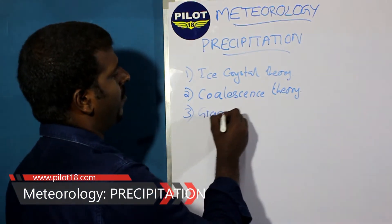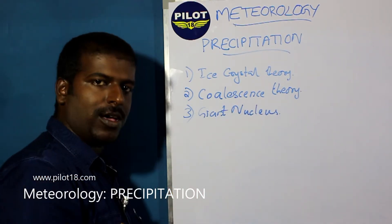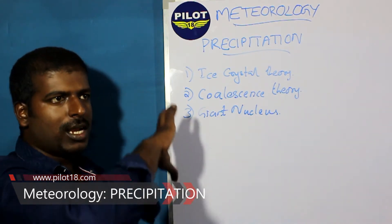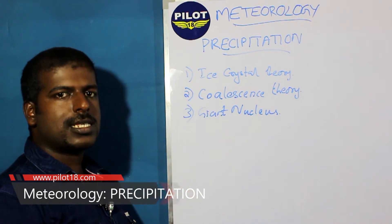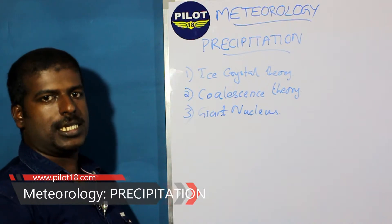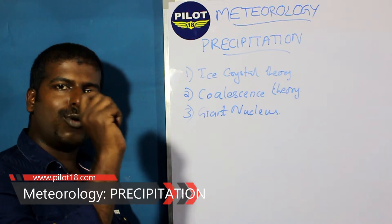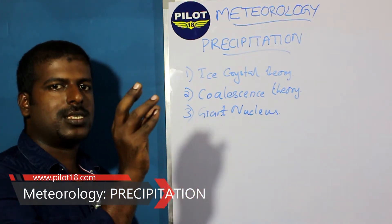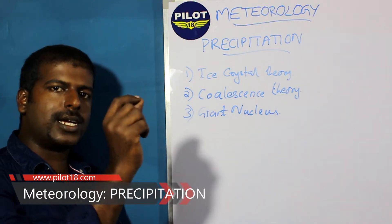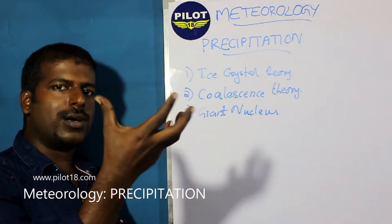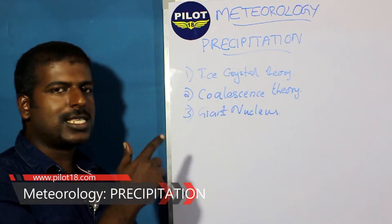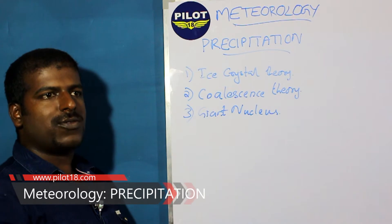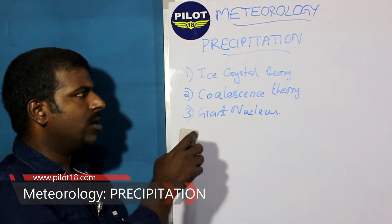There is one more theory — the giant nucleus theory. It is similar to the coalescence theory and describes rain above coastal regions. In clouds over coastal areas, small salt particles are present. The salt makes a nucleus to trigger coalescence. Salt particles dissolve in water, adding to the colliding power of droplets, triggering coalescence, and causing rain over coastal regions or clouds that come from the sea.